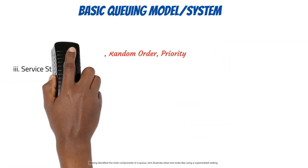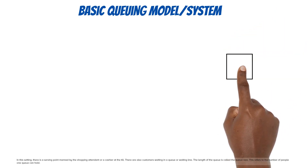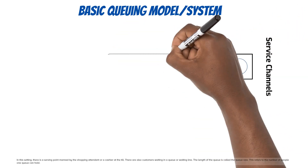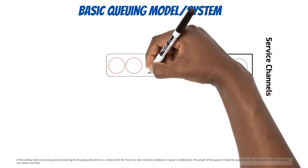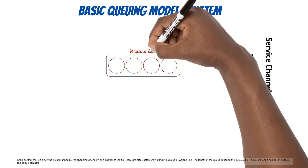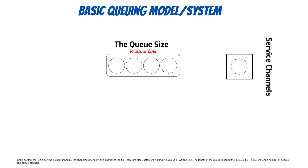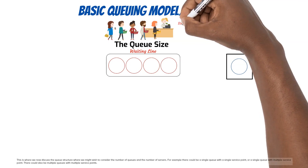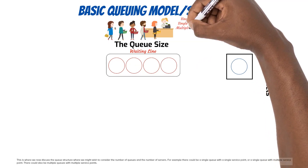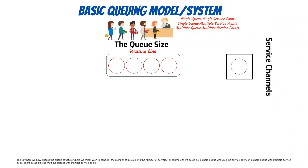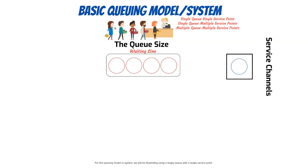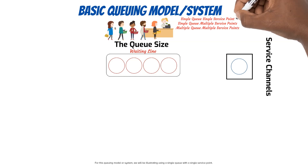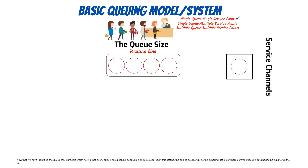Having identified the main components of a queue, let's illustrate what one looks like using a supermarket setting. In this setting, there is a serving point manned by the shopping attendant or cashier at the till, and there are customers waiting in a queue or waiting line. The length of the queue is called the queue size, referring to the number of people one queue can hold. The queue structure considers the number of queues and servers — for example, a single queue with a single service point, a single queue with multiple service points, or multiple queues with multiple service points. For this model, we illustrate using a single queue with a single service point.